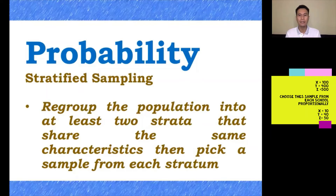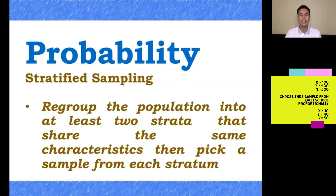For example, in a study of teachers' perception of online teaching, if there are 3 schools each with different numbers of teachers — school X has 100 teachers, school Y has 400, and school Z has 500 — it would be appropriate to choose sample numbers from each school proportionally: 10 from school X, 40 from school Y, and 50 from school Z. That's how we use stratified sampling.